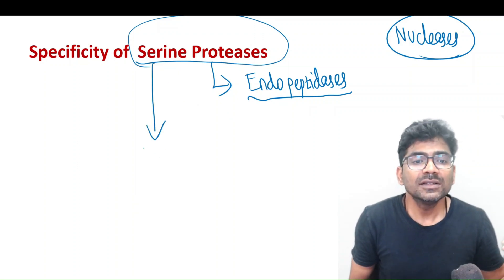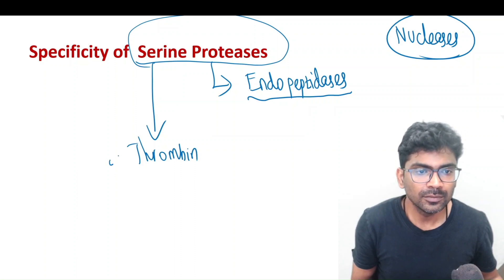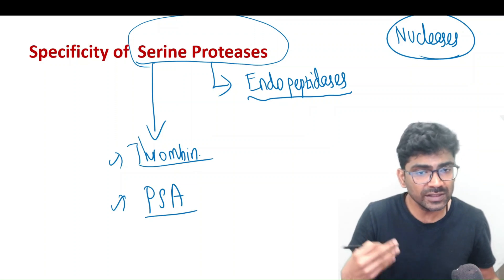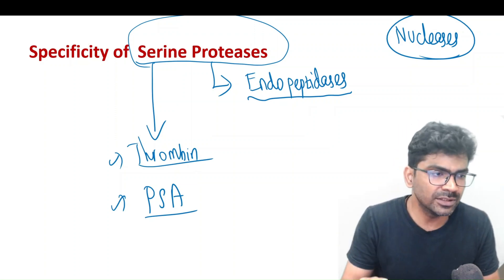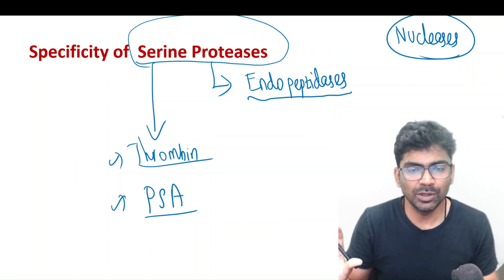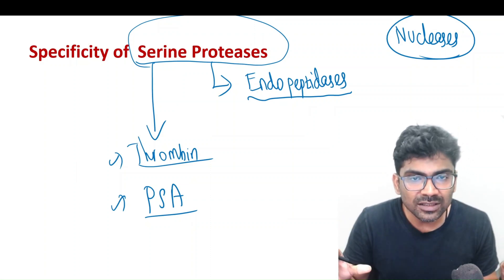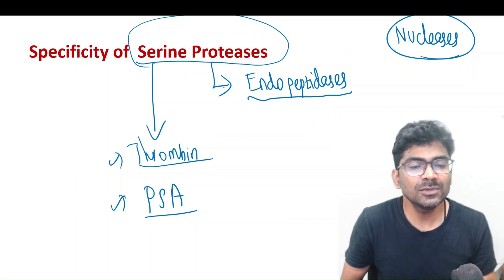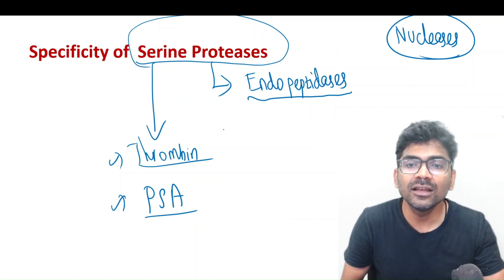There are many serine proteases, such as thrombin, prostate-specific antigen — the tumor marker — which is also a serine protease, and many serine proteases in the bacterial world. In this discussion, we will limit ourselves only to the three digestive enzymes from the pancreas: chymotrypsin, trypsin, and elastase.